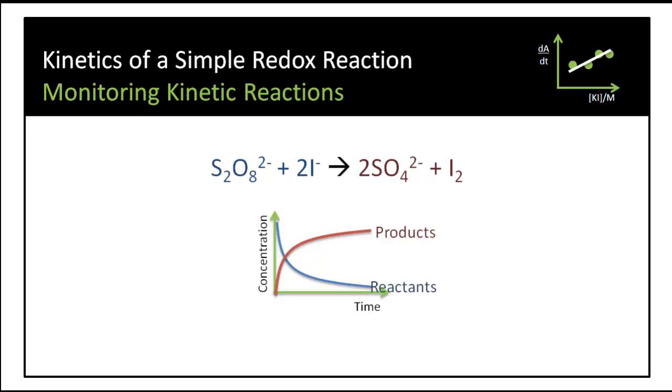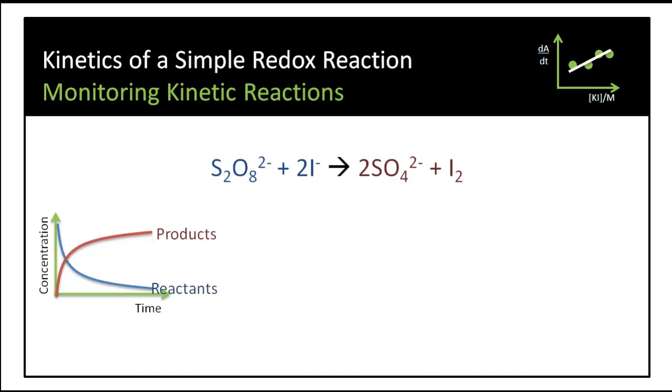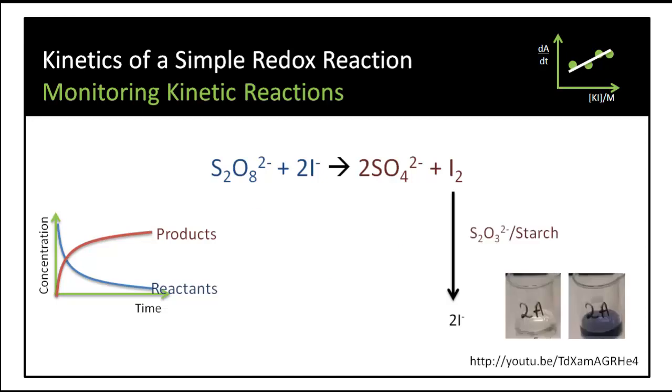For example, you probably already completed the iodine clock reaction where we mix iodine with a known excess of thiosulfate. This turns the iodine into iodide, and for the amount of time that the thiosulfate is present the solution will be clear. Once that's all used up it will turn blue. So we can measure that time taken to use up a known amount of thiosulfate.